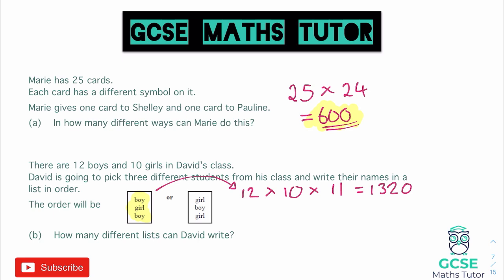There are two different ways to write the list, so we also need to work out girl, boy, girl. The first pick of a girl gives 10 options. Then a boy — there are 12 of those. Then another girl: we started with 10 girls, one has been picked, so that goes down to 9. We multiply them all together: 10 times 12 times 9, which comes out as 1,080.